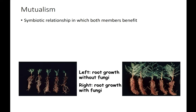With mutualism, the idea is it's a symbiotic relationship in which both members benefit. The most common, classic example is bees and flowers. The bees help the flowers spread their pollen, which helps the flowers to thrive and crossbreed and keep their genetic diversity up, whereas the bees get food in the form of nectar from the flowers. So they both benefit — there's your mutualism.